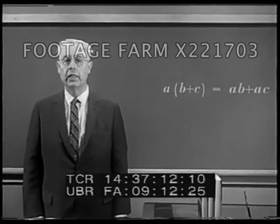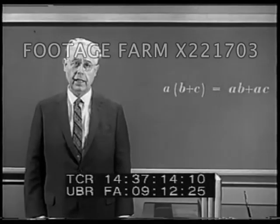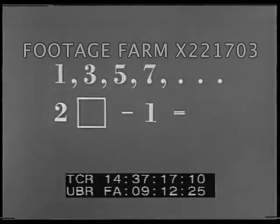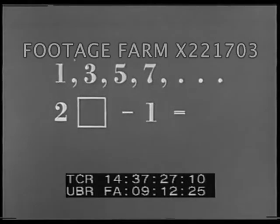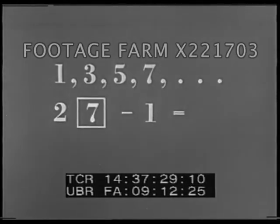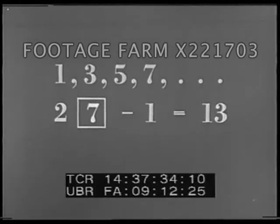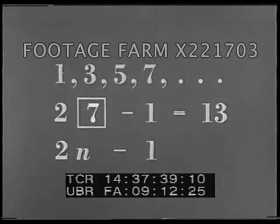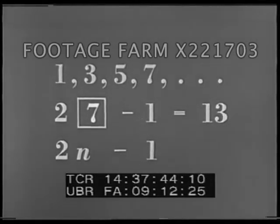Everyone knows the distinction between odd and even numbers. Here is the pattern underlying them. Each of these odd numbers is 2 times a natural number minus 1. Fill in the box with any integer — a placeholder, say 7 — and an odd number is obtained; in this case, 13. Of course, ordinarily we use a letter rather than a box to indicate a placeholder or variable. But either way, the placeholder serves to reveal the pattern.